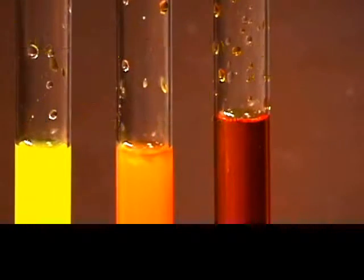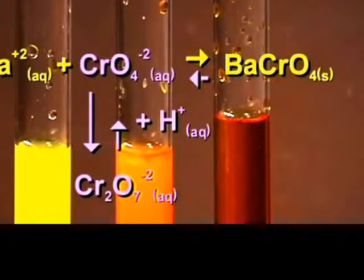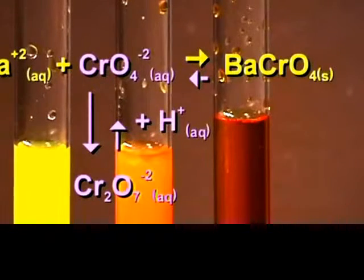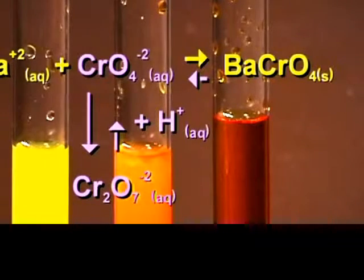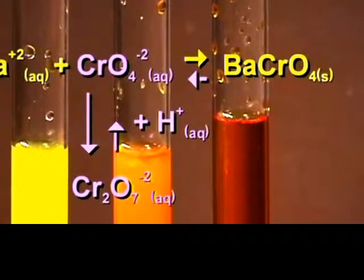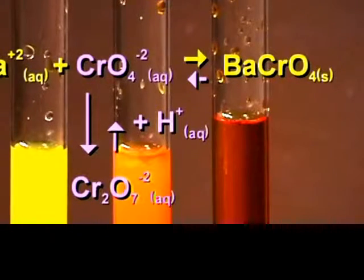When we add acid to the third tube, it shifts the equilibrium in the reverse direction and decreases the chromate ion concentration to the point where no barium chromate forms.